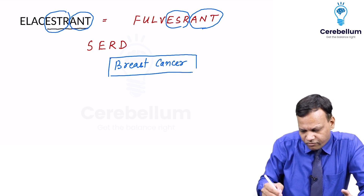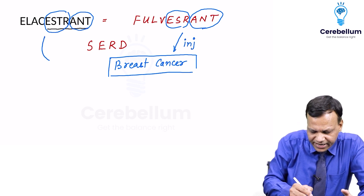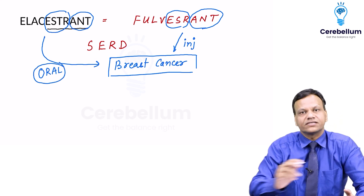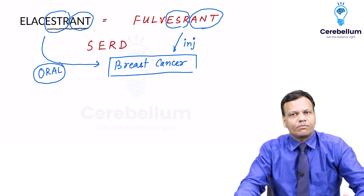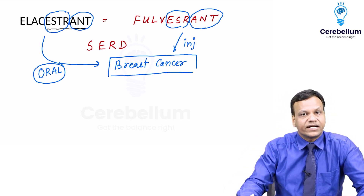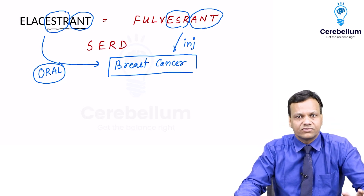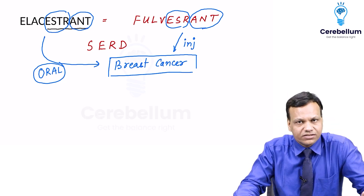What is special? Fulvestrant is an injectable drug, whereas Elacestrant is a new drug which can be given orally for breast cancer. Obviously it will be indicated in estrogen receptor positive breast cancer, because it inhibits the action of estrogen.